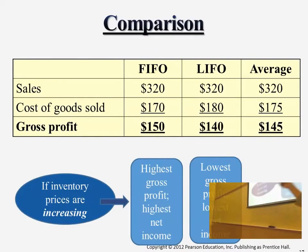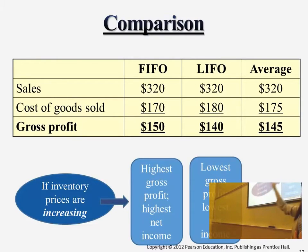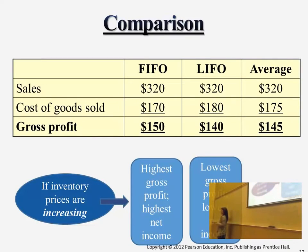So this is an example. If we're making sales using all three different costing methods — let's say the retail price is 320 for all three cases — if we use different methods, you will see cost of goods sold expense is the least for FIFO, and the highest for LIFO, because in the case of rising prices, LIFO always picks the highest cost first.